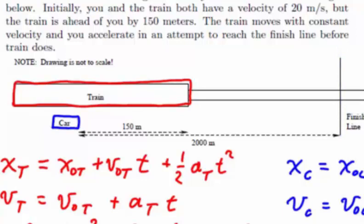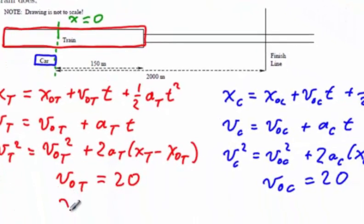Seems to me that the simplest way to approach it is to define x equals 0 at the location of the car. In this case, we can set the initial positions of both the train and the car as being x0 of the train is 150, whereas x0 of the car is 0.